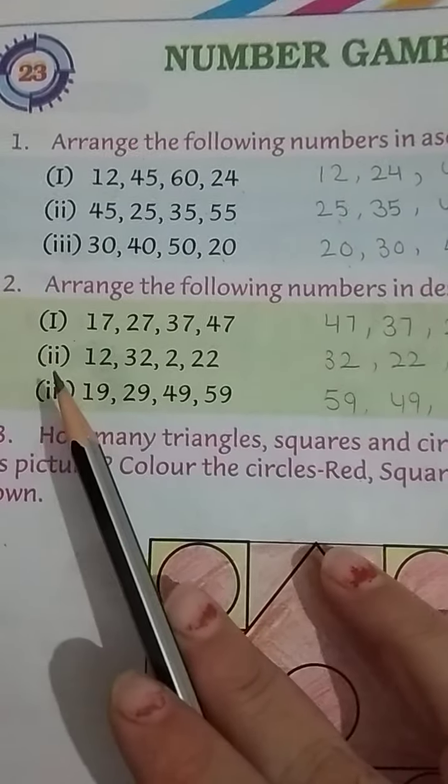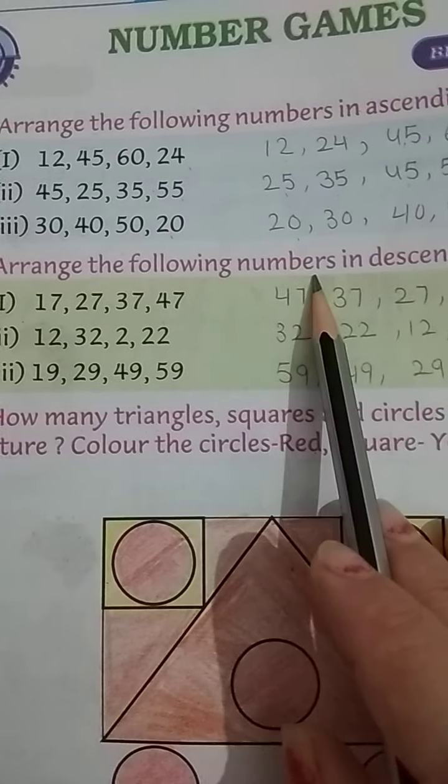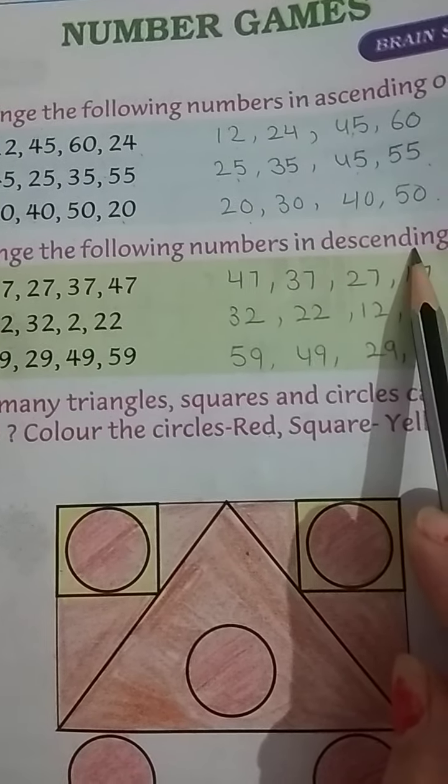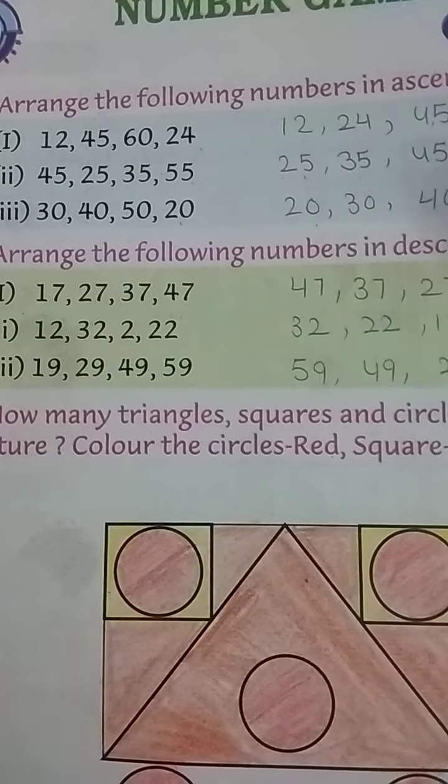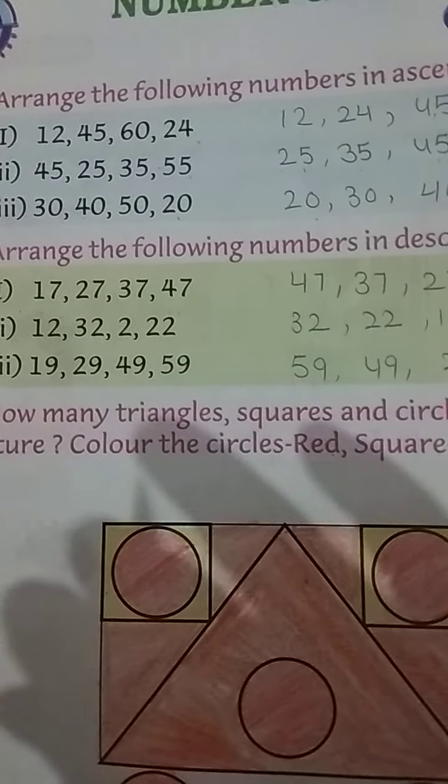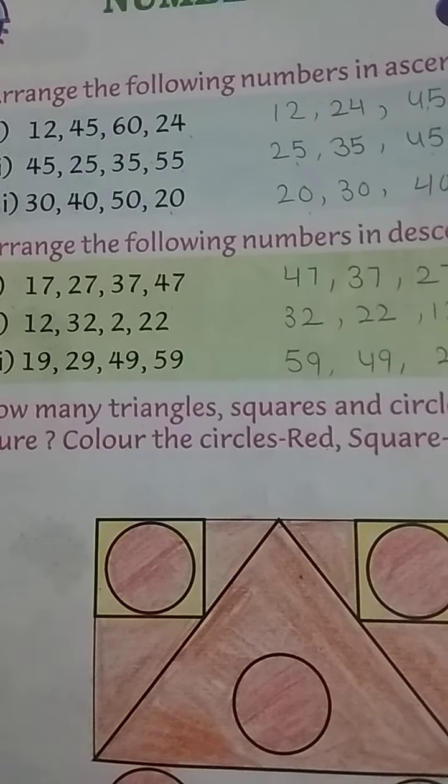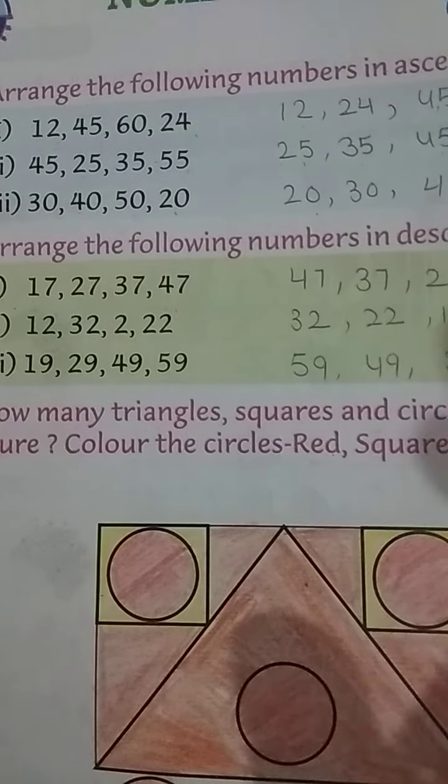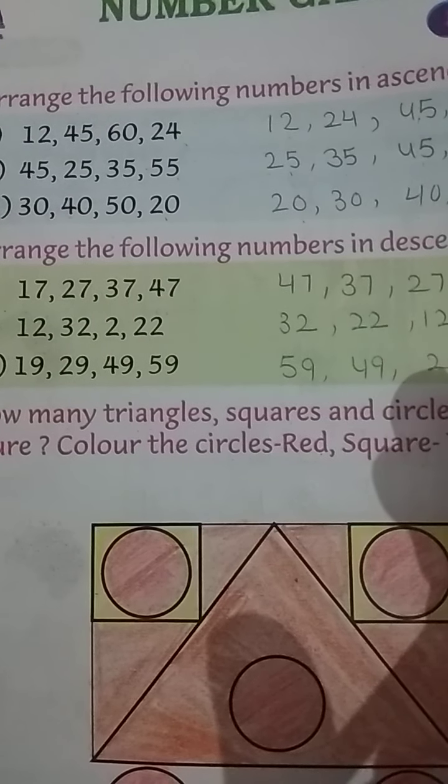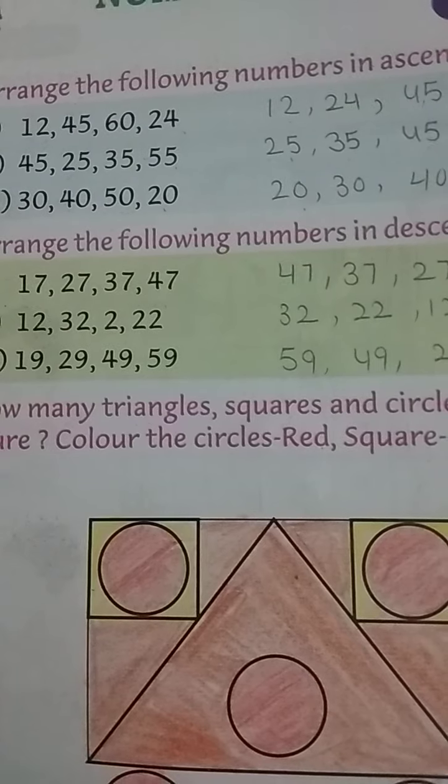Next. Second. Arrange the following numbers in descending order. Abh yahaan pe numbers dehen ya descending orders ke aata hai jis mein aap biggest number se smallest number me jatate ho. Thik hai? Yeh haan pe aap biggest number ko pahle likhte ho. Or smallest number ko paat me likhte ho.